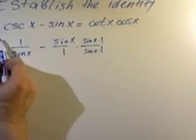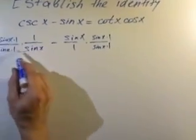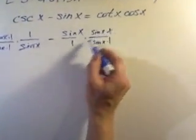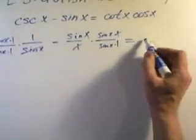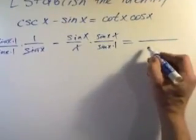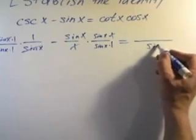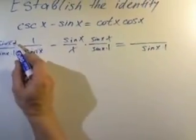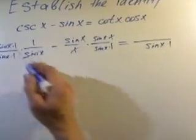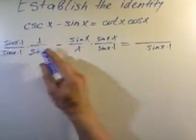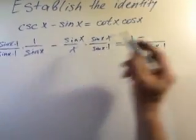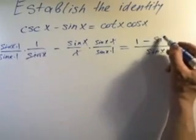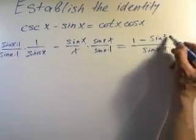From this we get this cancel, this cancel, and we get single fraction with the least common denominator. And the numerator will look like 1 minus sine squared x.